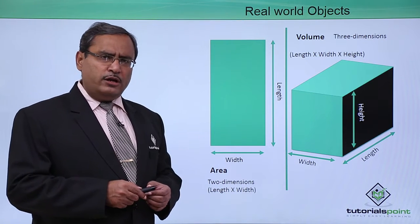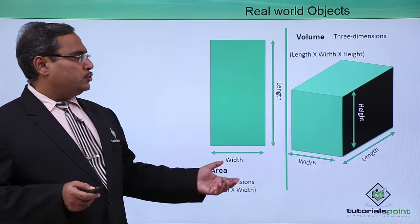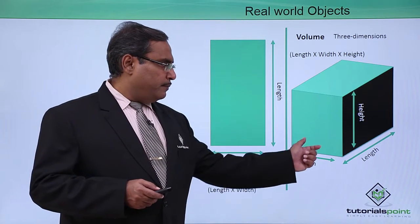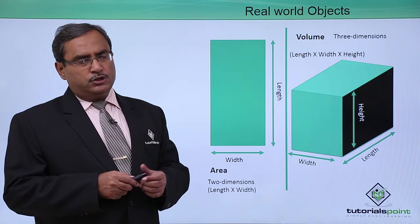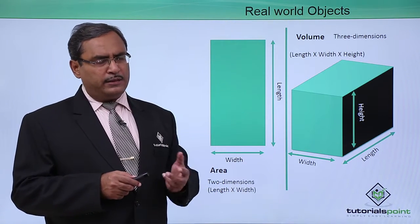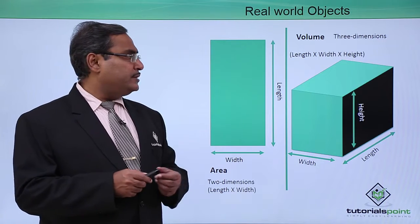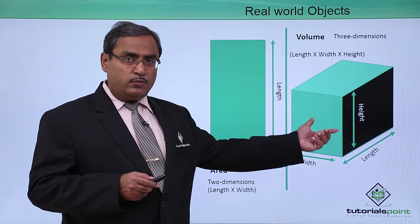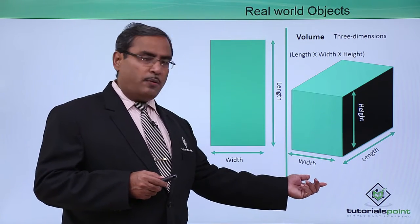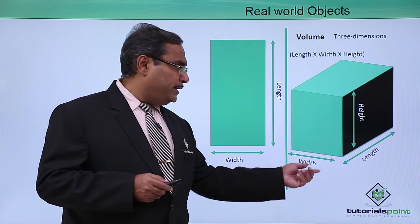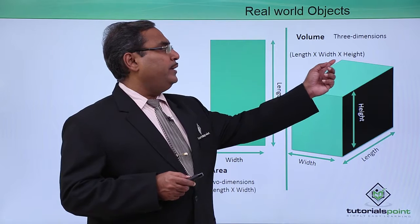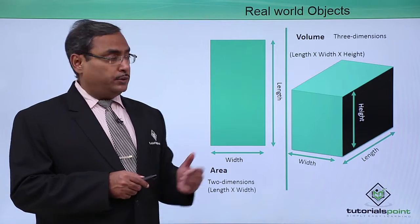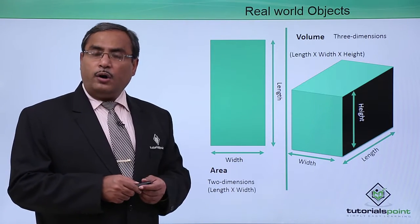Let us consider another real-world object — a box. This box has three dimensions: length, breadth, and height. To calculate the volume of this real-world object, we use the formula: volume equals width into height into length. So length into width into height gives the calculated volume of the box.